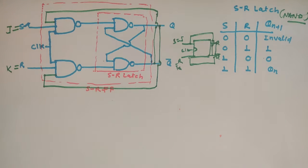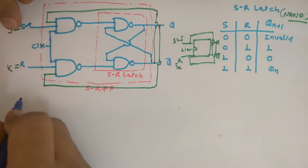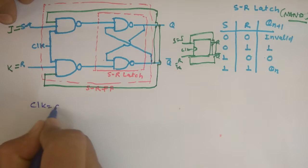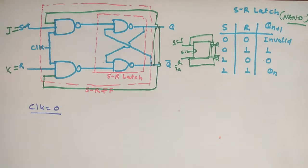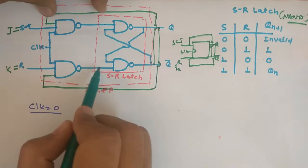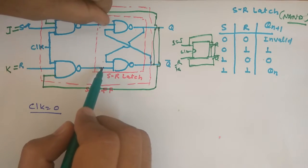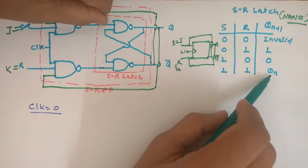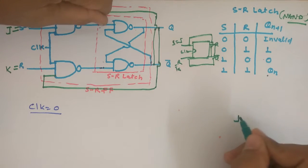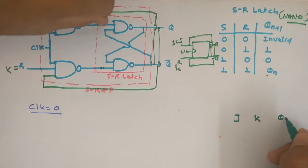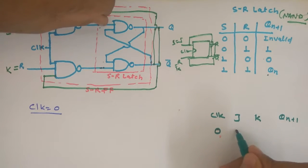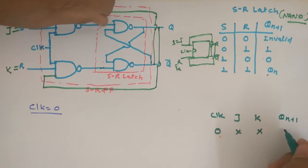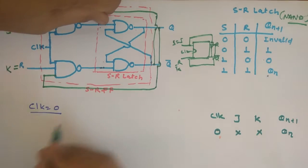The first condition: when clock is equal to 0. Here, 0 into something will be 0, and complement of 0 is 1, so here the input will be 1 and 1. For SR latch, when input is 1 and 1, the output is Qn. So here we will make the table with J, K, Q and clock. When clock is zero, it doesn't matter what J and K are — the output will always be Qn. So the first condition is done.